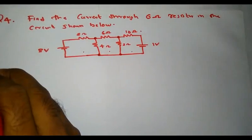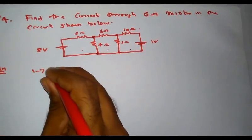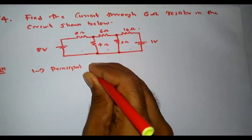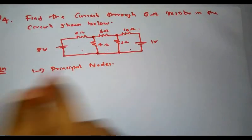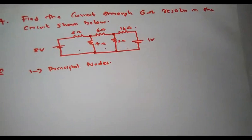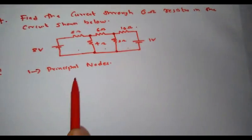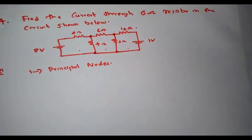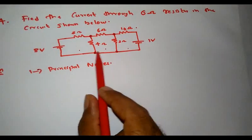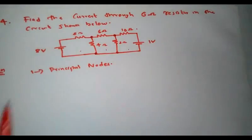The first step of nodal analysis is to identify the principal nodes. Principal nodes are those nodes to which three or more elements are connected. That is, when three or more elements are connected to a certain point, that point can be identified as a principal node. Identifying the principal nodes in this circuit, these two are my principal nodes.